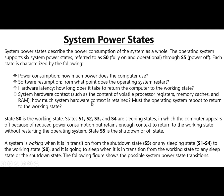Now I'm going to explain exactly what the system power states are in detail. The system power states describe the power consumption of the system as a whole. The operating system supports six system power states. Each state is characterized by how much power the computer uses — because the power consumed in S0 is not like S5. S5 is the power-off state, so no power is consumed. But S0 means the laptop is in full operation, so it will consume more power.